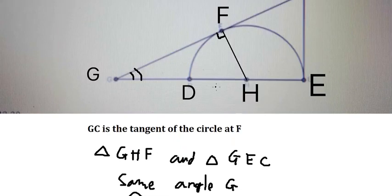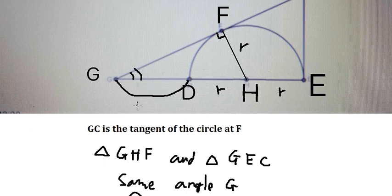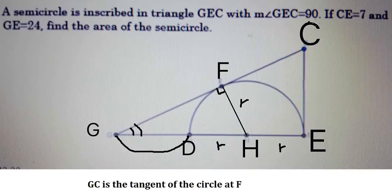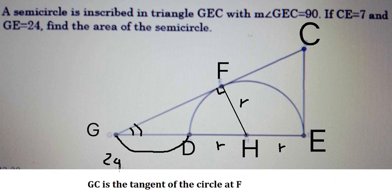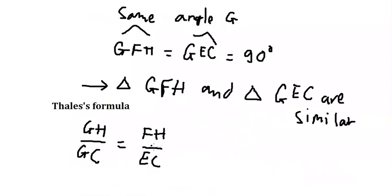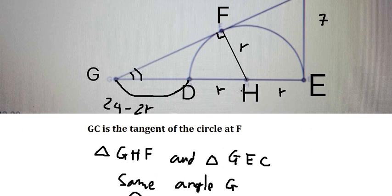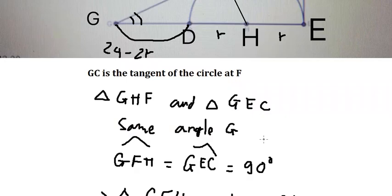Let's put all the numbers in here. GH we can calculate, GE is 7 and GC is GE plus EC. This one is 7, so we have 24 minus r. GH is 24 plus r.